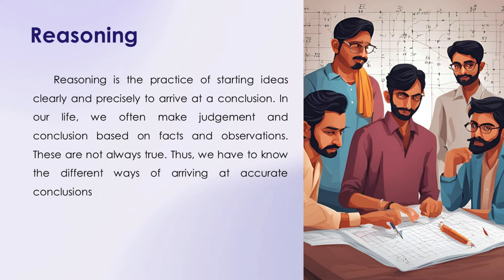For example, when you decide not to bring an umbrella because the sky looks clear, you're using reasoning. But it's important to recognize that our conclusions are not always correct, especially if our reasoning is flawed. This is why understanding the different ways of reasoning is crucial to making accurate conclusions.